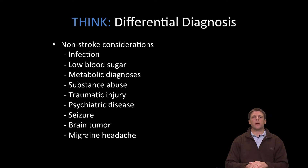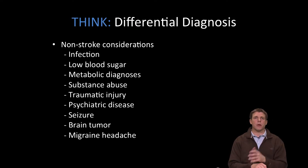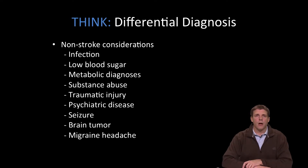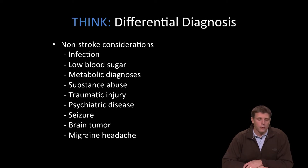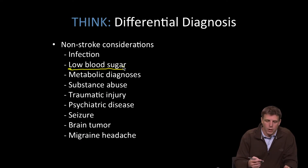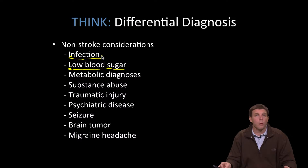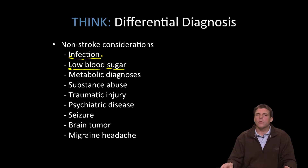We considered a differential diagnosis, which is a very important part of our interaction with the patient. We considered neurologic as well as non-neurologic mimics of stroke. The most important non-neurologic mimics include low blood sugar, which can frequently manifest with focal neurologic findings, as well as infection — both central nervous system infections such as meningitis, encephalitis, or brain abscess — or more systemic infections like sepsis, which can all produce neurologic findings.